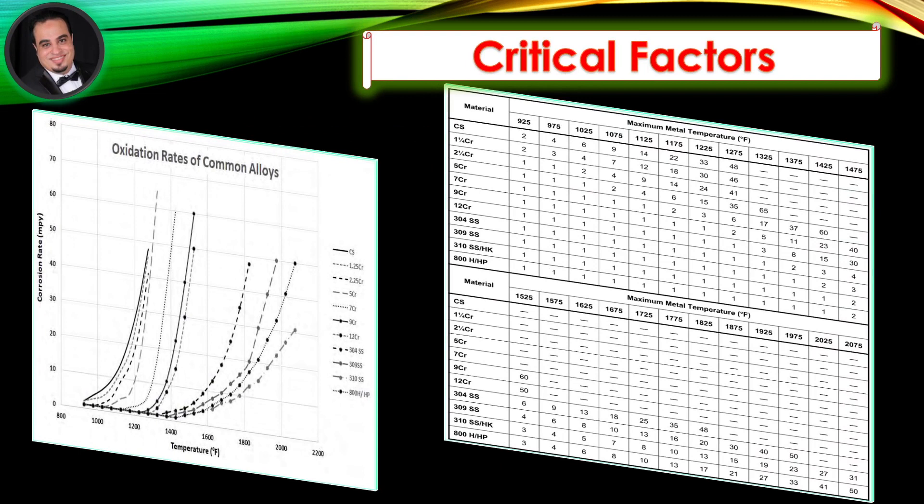As illustrated in the table, estimated oxidation rates in mils per year of common alloys, and as illustrated in the figure, estimated oxidation rates based on the data in the table.